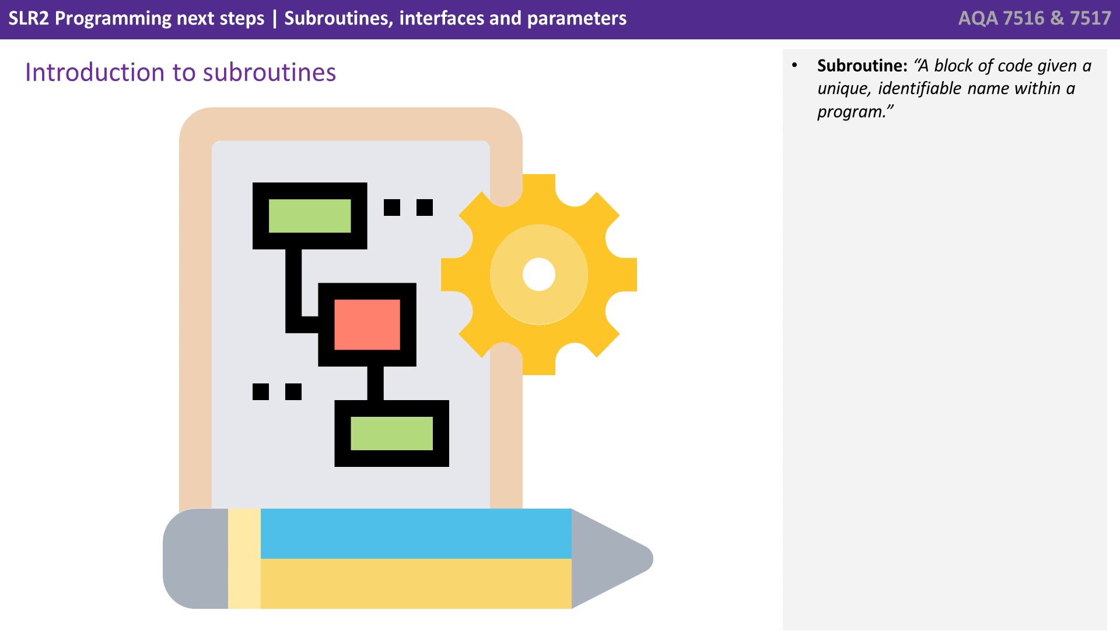A subroutine is a block of code given a unique identifiable name within a program. We use subroutines to break down a larger problem into a series of smaller more manageable problems, making them easier to code, debug and reuse.